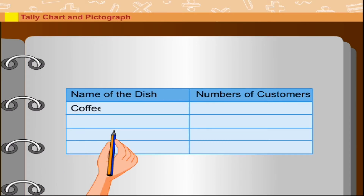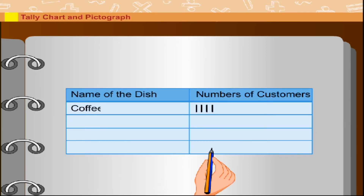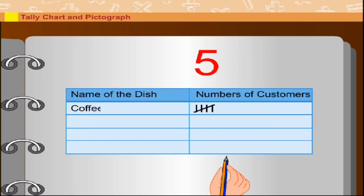One column defines the name of the dish and the other shows the number of customers. He wrote coffee in the first column, and in the second column he drew four vertical lines to show four customers, and one slanting line crossing the four vertical lines to show five customers. In this way, he formed a group of five.